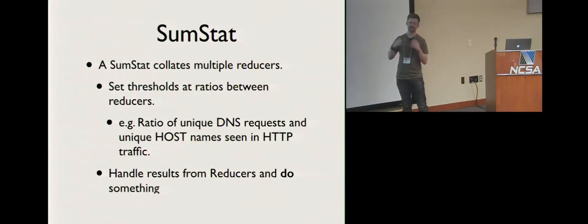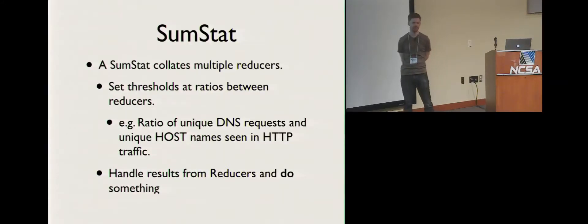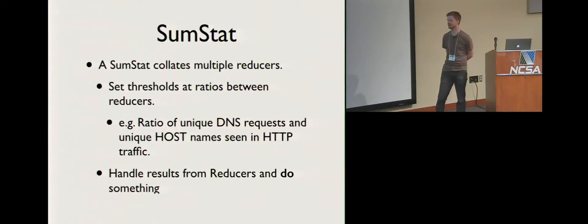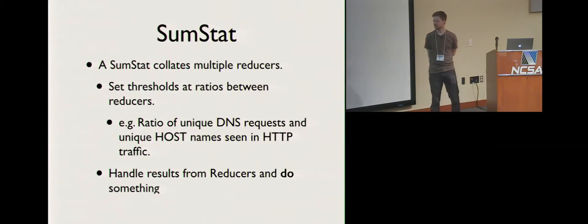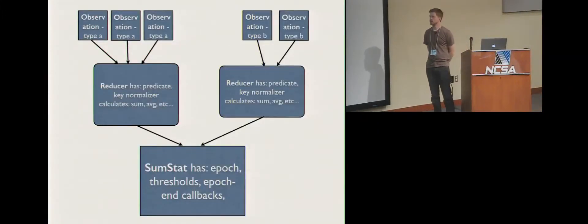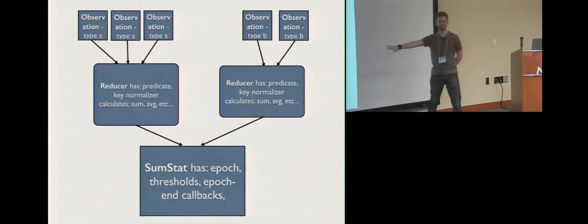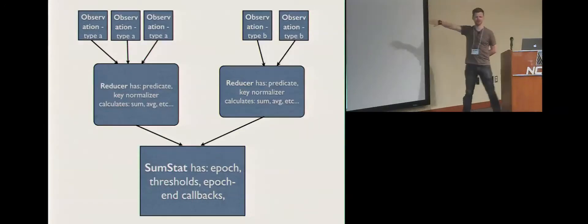You can do things like calculate ratios between multiple reducers and actually set thresholds on ratios of those. You could imagine unique DNS requests and unique hostnames — a ratio of those per host on your network. It's the kind of stuff I don't know of any tools that do easily and memory-efficiently on large amounts of traffic. So again: you observe things, you calculate things, you do things. Observe, calculate, do — that's actually a good way to structure it.